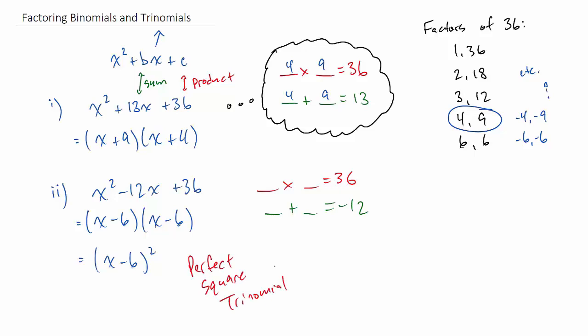This is a special type: when you use the same number two times in a row, like negative 6 and negative 6, it's called a perfect square trinomial. Keeping with the 36, this time let's do negative 35x in the middle.